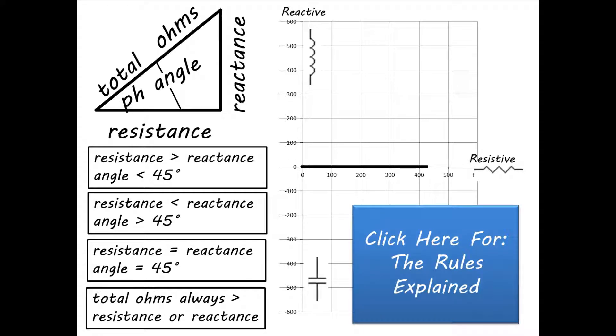First, graph the point or label the triangle. The problem had a 400-ohm resistor in series with a 600-ohm reactance inductor and a 300-ohm reactance capacitor. Capacitive reactance is negative, so that gives us a combined reactance of positive 300 ohms. Put 300 ohms on the vertical side of the triangle and 400 ohms on the horizontal side for the resistor.